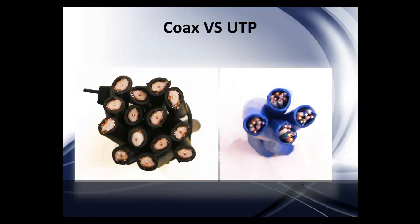Here we have a picture of 16 coax cables. Using baluns, you can eliminate the cost and the bulk — as you can see how large all of these 16 coaxes are — versus a UTP wiring system that can be used as a balun. Each two-wire set will be used for one balun, so in most cases you can hook up four baluns through one Cat5 cable. With coax cabling, you can only use one coax cable per camera. This is one of the benefits of having baluns.